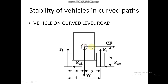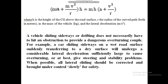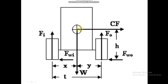This combined force will try to overturn the vehicle. The overturning couple is written as: centrifugal force mv²/r plus inertia force ma, multiplied by h — the height of the center of gravity above the road surface. So the overturning couple equals (CF + ma) × h, which gives the total turning couple acting on the right side.